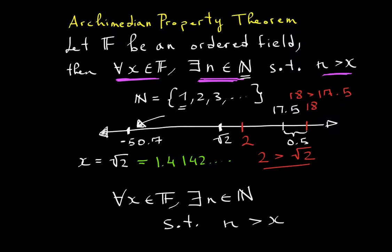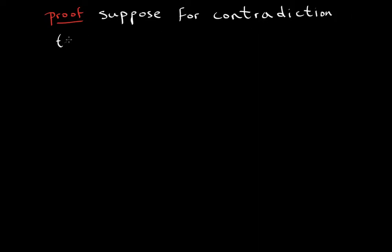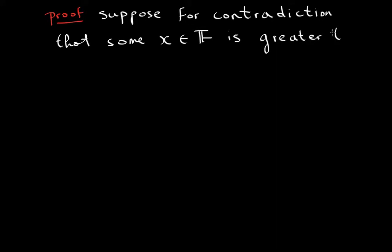So let me prove this to you. I'm sure that's why you're watching this video — it's the proofs that get you. To prove this, I will use contradiction. Suppose for contradiction that some x is an element of the field, and x is greater than any n which is an element of the naturals.